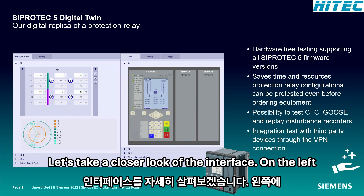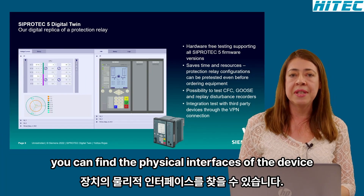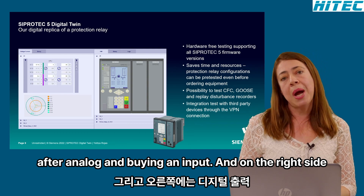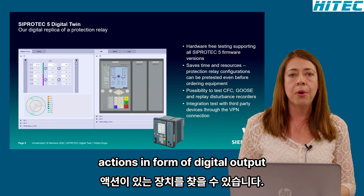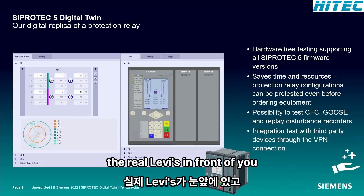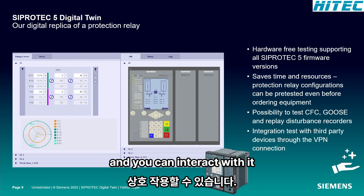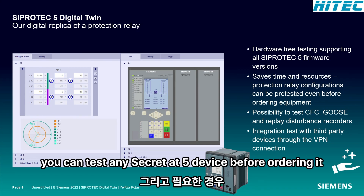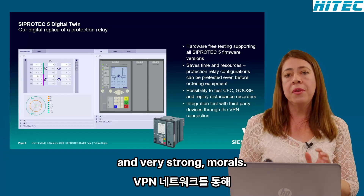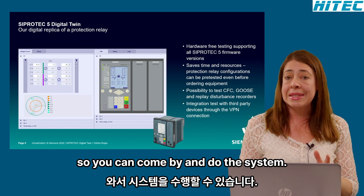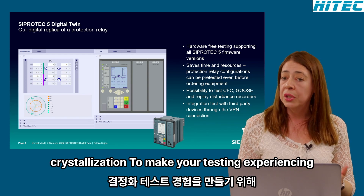Let's take a closer look at the interface. On the left side, you can find the physical interfaces of the device such as the analog and binary inputs. On the right side, you find the device with its reactions in the form of digital outputs and logs. The device gives you the same look and feel as if you had the real device in front of you, and you can interact with it using the menus and operation keys as in the physical device. If required, even the real and virtual worlds can come together for testing through a VPN network, combining your existing testing lab with the extended capabilities of virtualization.